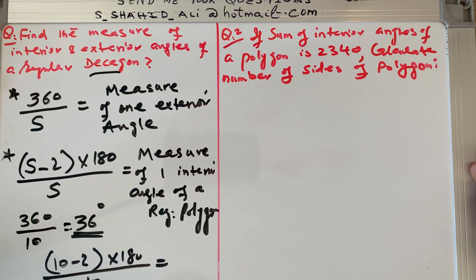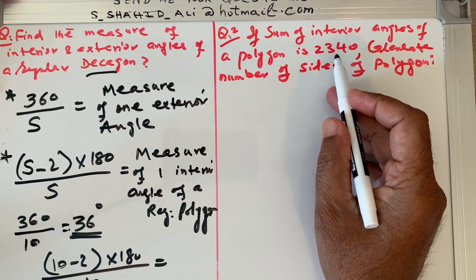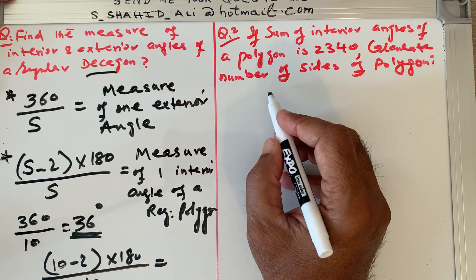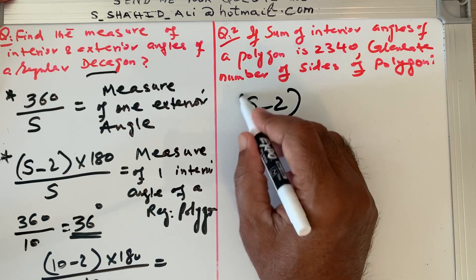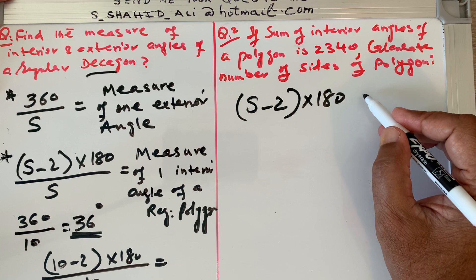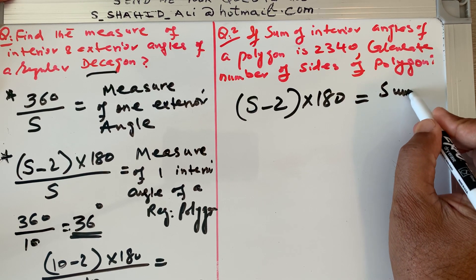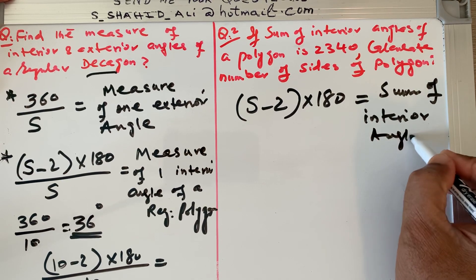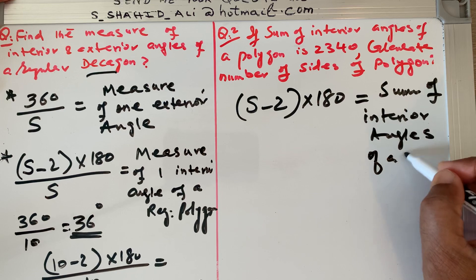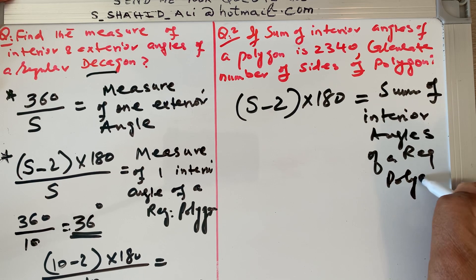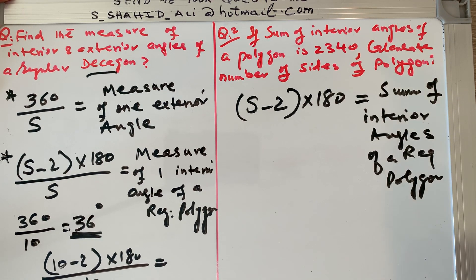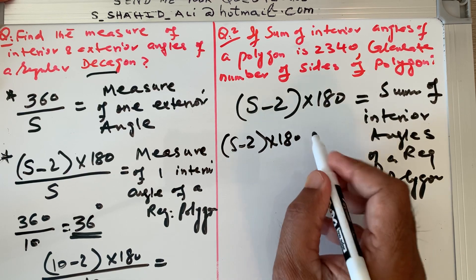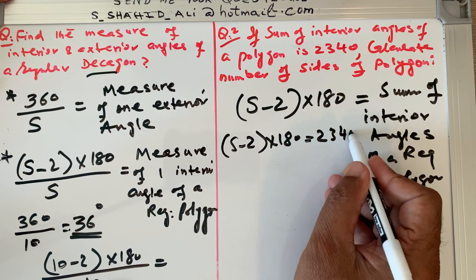The second question: given that the sum of the interior angles of a polygon is 2340 degrees, calculate the number of sides of the polygon. We use the same formula from the last video: (s minus 2) times 180 equals the sum of the interior angles of a regular polygon. So we set (s minus 2) times 180 equal to 2340.